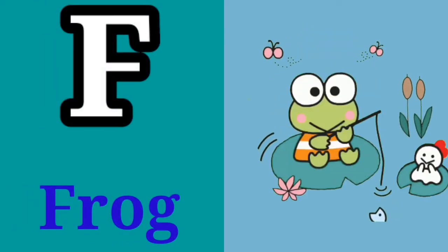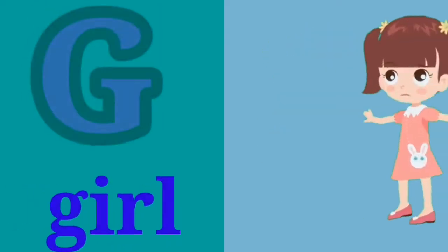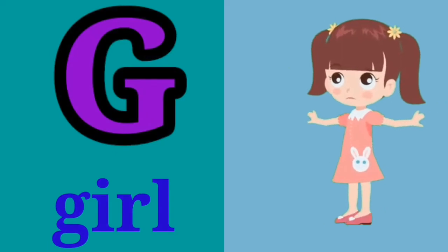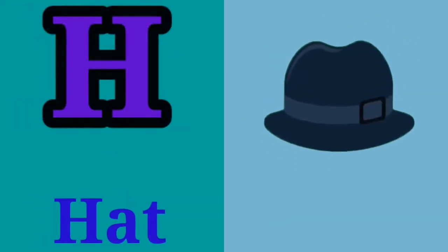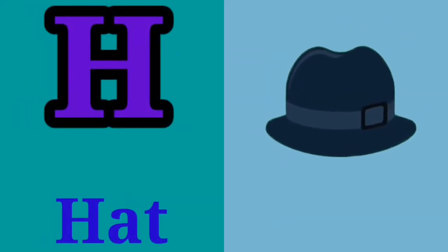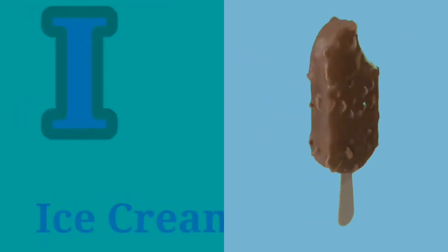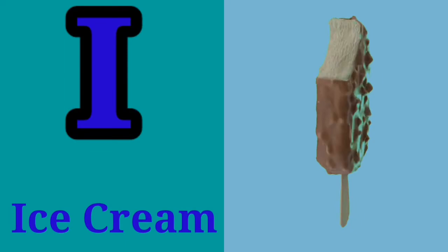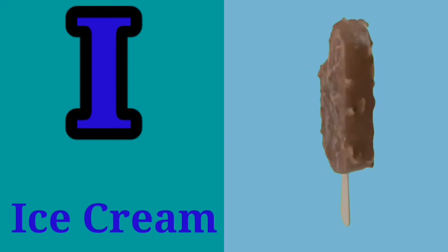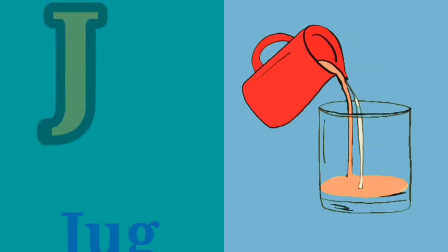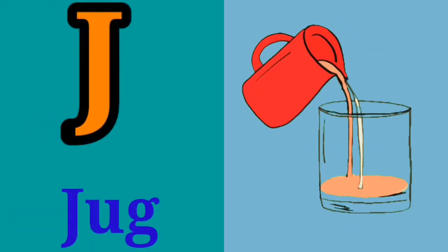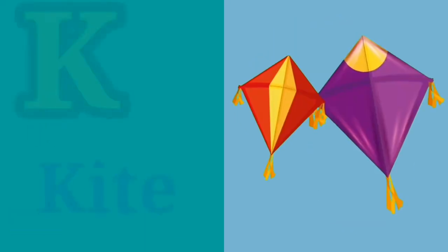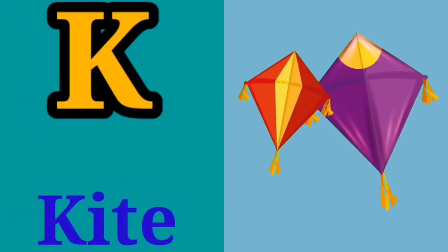F for frog, G for girl, H for hat, I for ice cream, J for jug, K for kite.